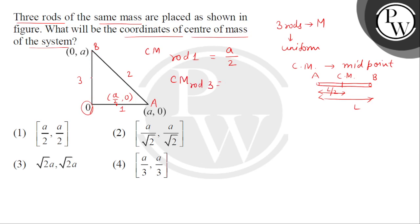So, iska joh x coordinate center of mass ka, woh toh 0 hi rahega. Y coordinate ka half coordinate aa jayega center of mass. Then, joh humare paas inclined rod hai. Ismein, agar hum yahan par coordinates dekhe.